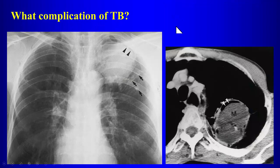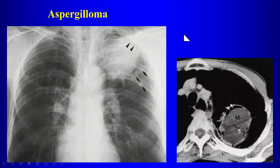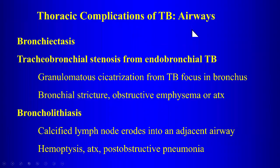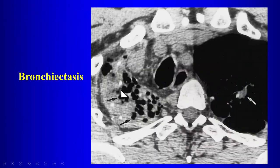Another complication: aspergillomas can grow within pre-existing cavities. TB is a common cause of these pre-existing cavities. Fungus balls can grow within those cavities — that is aspergilloma. Additionally, anybody with fibrotic lung disease is at increased risk for bronchogenic cancer, so these patients are also theoretically at increased risk for lung cancer.